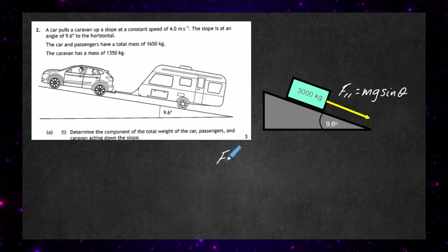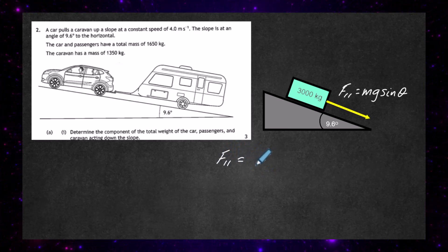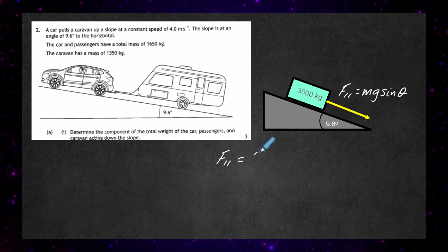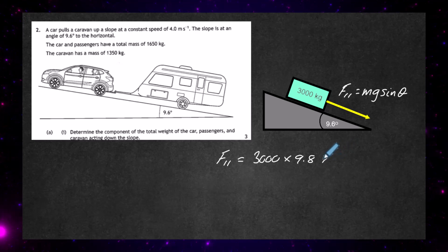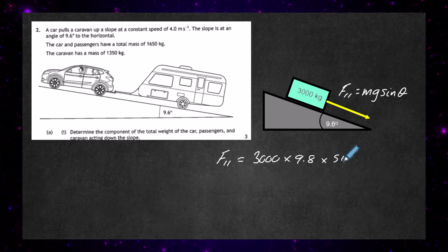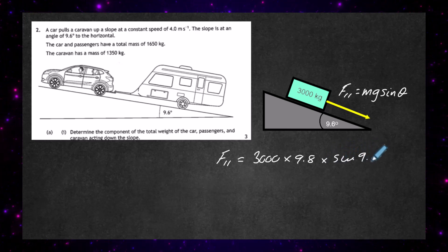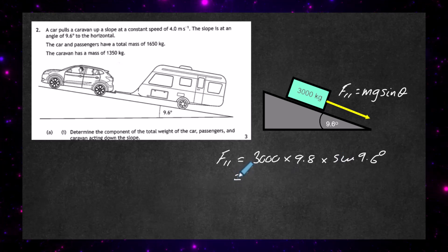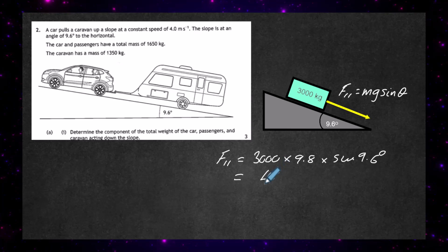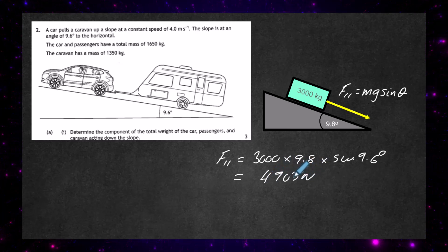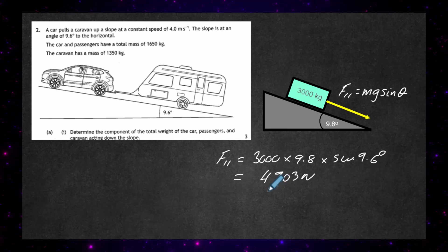The component of the weight parallel to the slope uses the total mass of 3,000, multiplied by 9.8, the acceleration due to gravity, times sine of the angle of 9.6 degrees. We plug that into our calculator and get a value of 4,903 newtons. So that's the component of the weight acting down the slope.